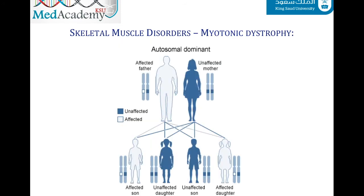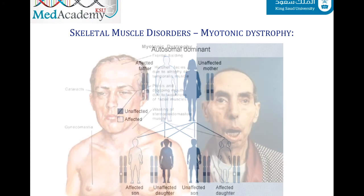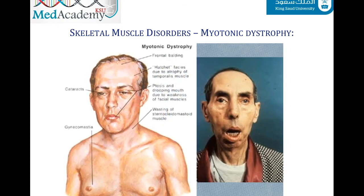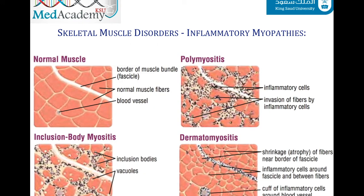Another form of muscular dystrophy is myotonic dystrophy, which is an autosomal dominant disease — meaning an affected parent will pass the disease to 50% of their children. It is characterized by myotonia, which is the sustained involuntary contraction of a group of muscles. Patients complain of proximal weakness, stiffness, and other non-muscular complaints.